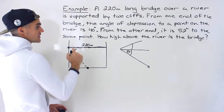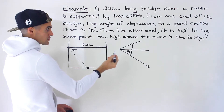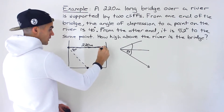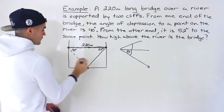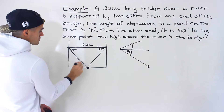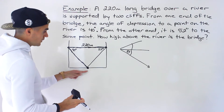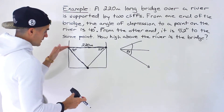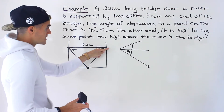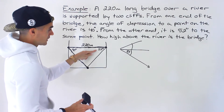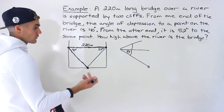From the other end of the bridge, the angle of depression is 52 degrees to that same point. So this angle right here is going to be 52 degrees. And what they're asking for is how high above the river is the bridge.